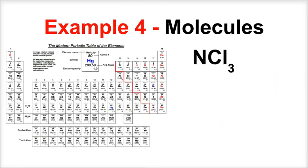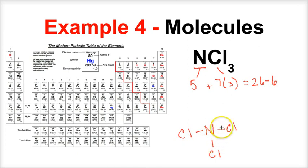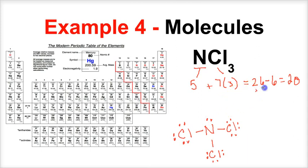Now let's look at nitrogen trichloride, NCl3. Nitrogen has 5 valence electrons; chlorine has 7 times 3, giving 26 valence electrons total. Nitrogen is less electronegative than chlorine, so it's the central atom, bonded to three chlorines. The three bonds use 6 electrons, leaving 20 electrons to satisfy the octet rule for each atom. Every atom ends up with 8 electrons — that's the Lewis structure for NCl3.